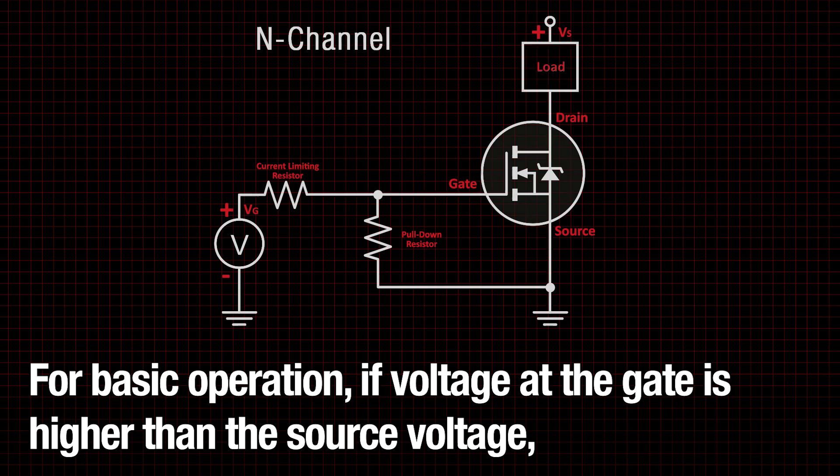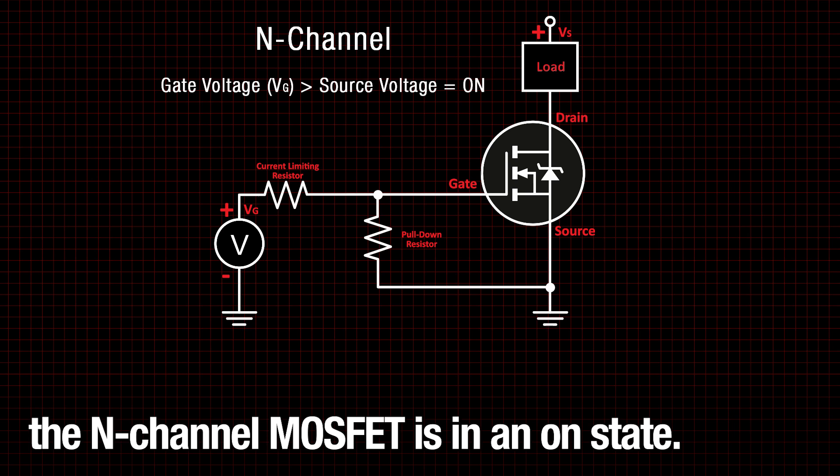For basic operation, if voltage at the gate is higher than the source voltage, the n-channel MOSFET is in the on state.